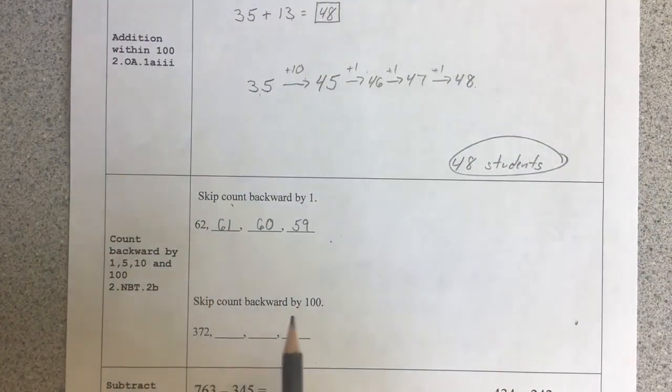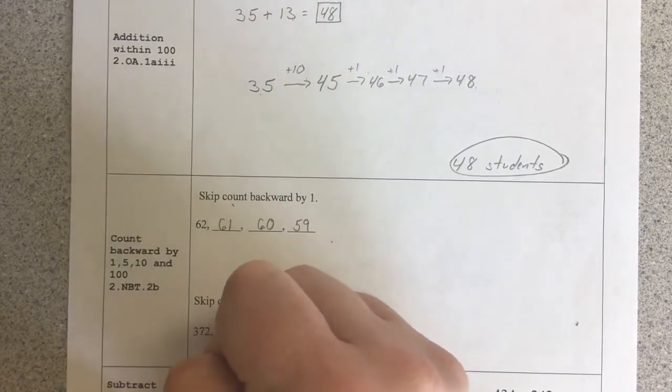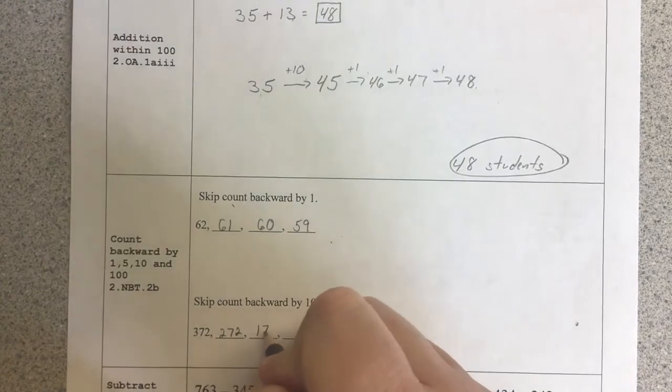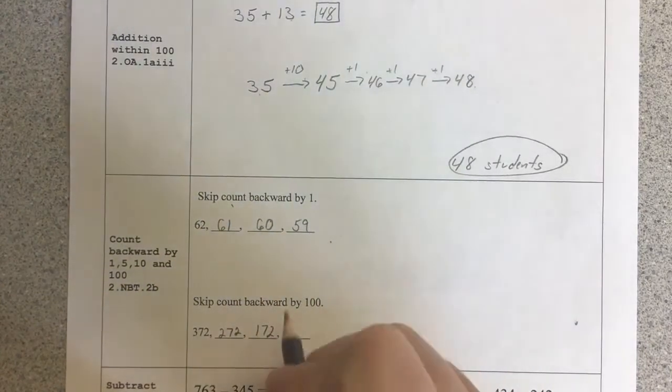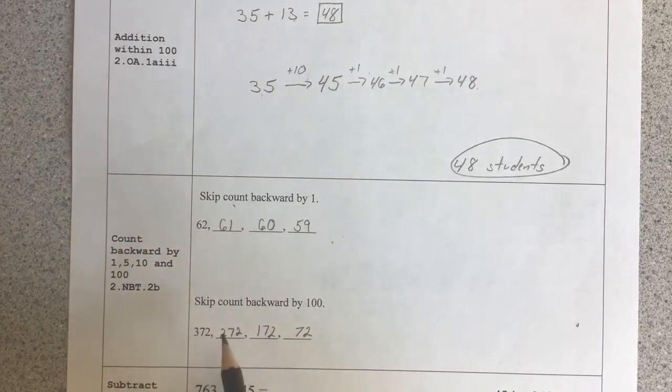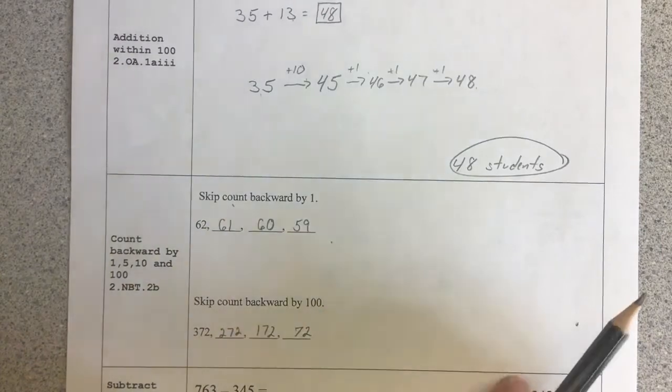Skip count backward by 100. So now I'm taking 100s away. So 372, I take 100 away, I'd have 272. Take 1 of the 100s away, I have 172. Take the 100 away, I'm left with 72. Notice the only change is each time I'm taking away 1 from the 100s place.